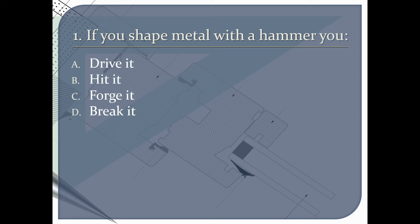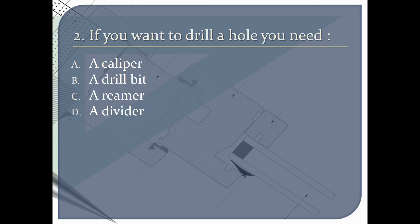If you shape metal with a hammer you: B hit it, C forge it, or D break it. If you want to drill a hole you need A a caliper, B a drill bit, C a reamer, or D a divider.